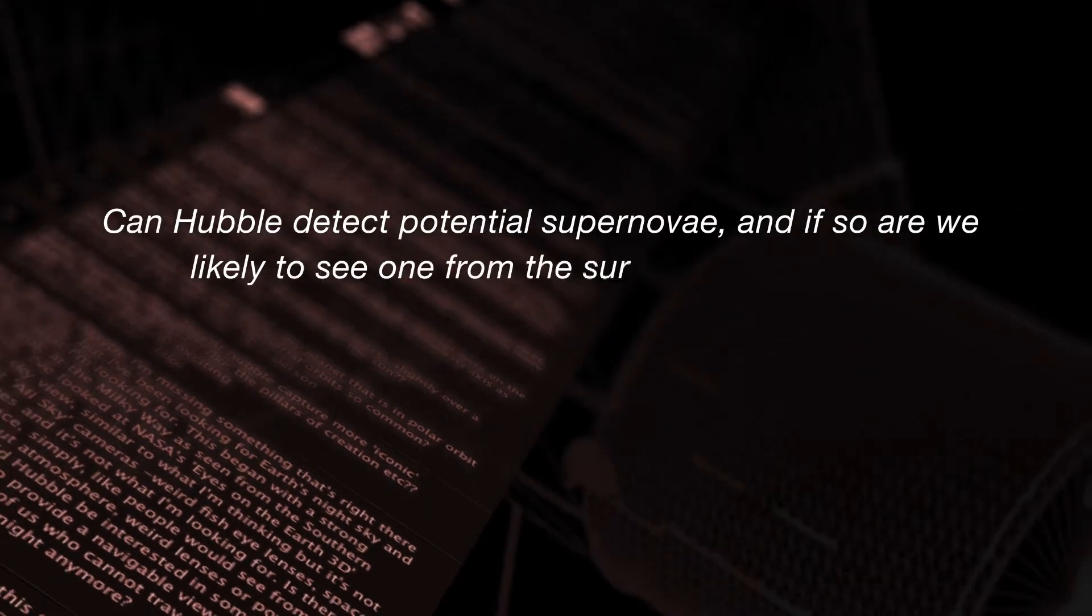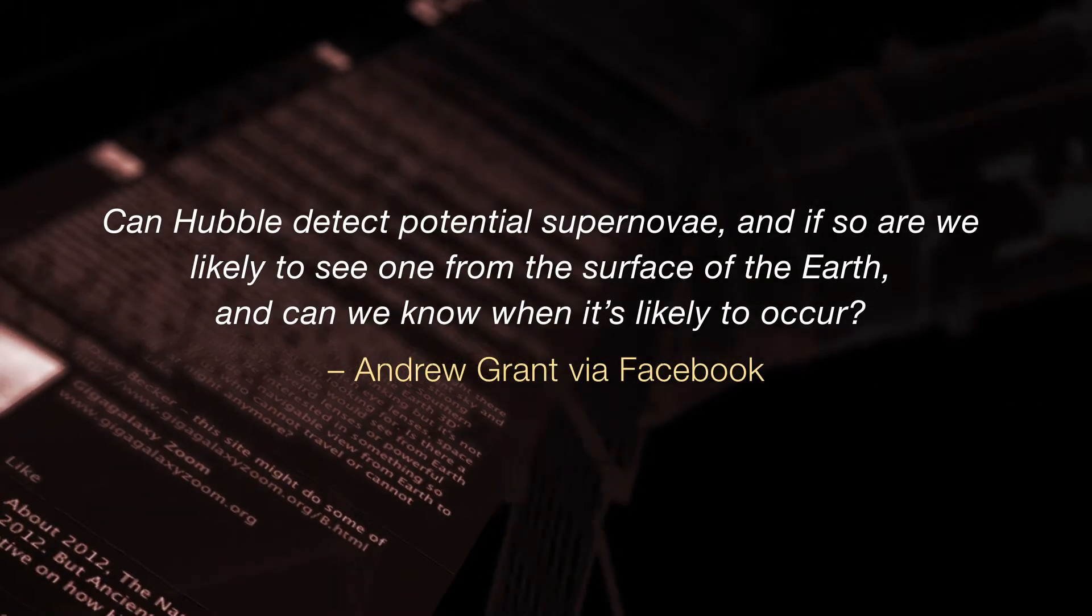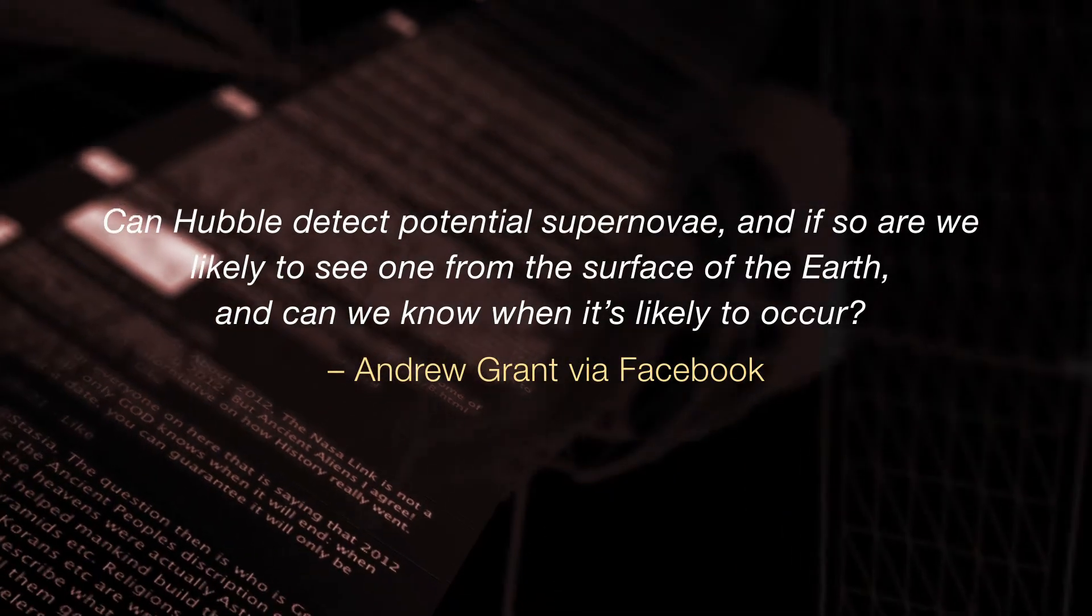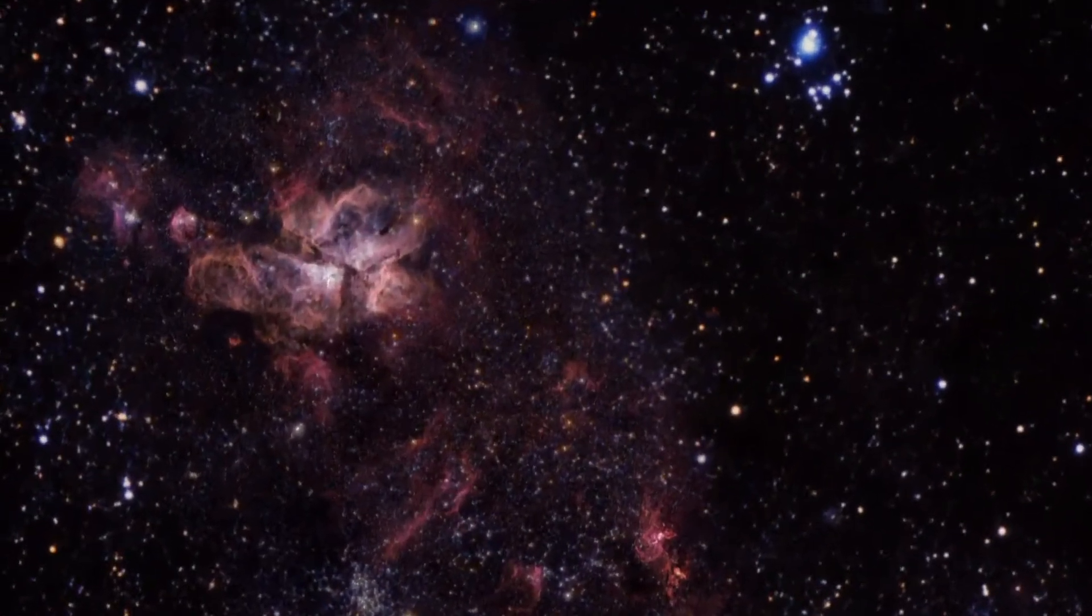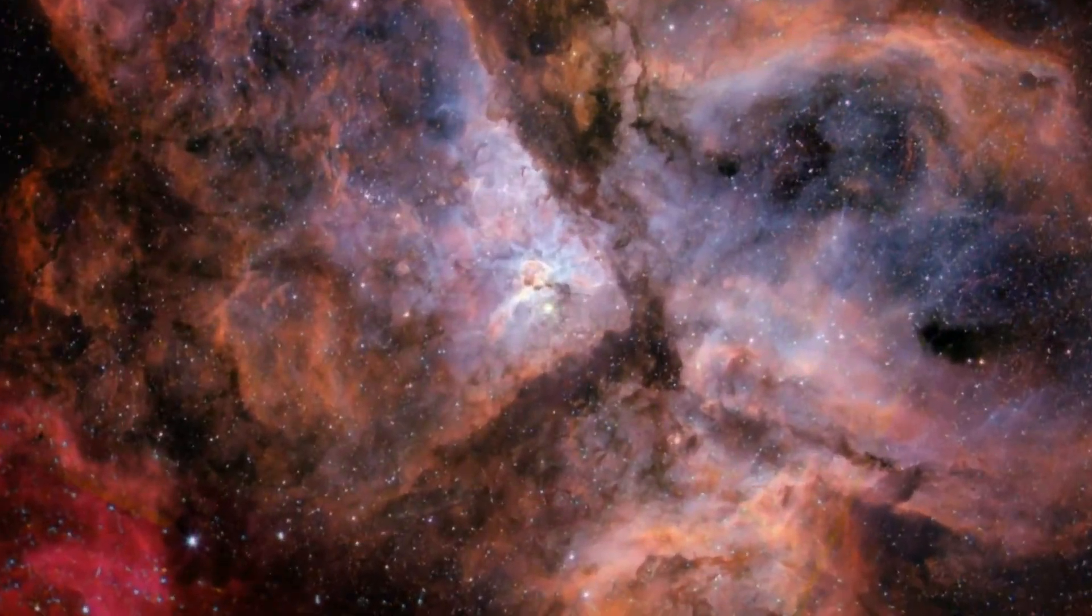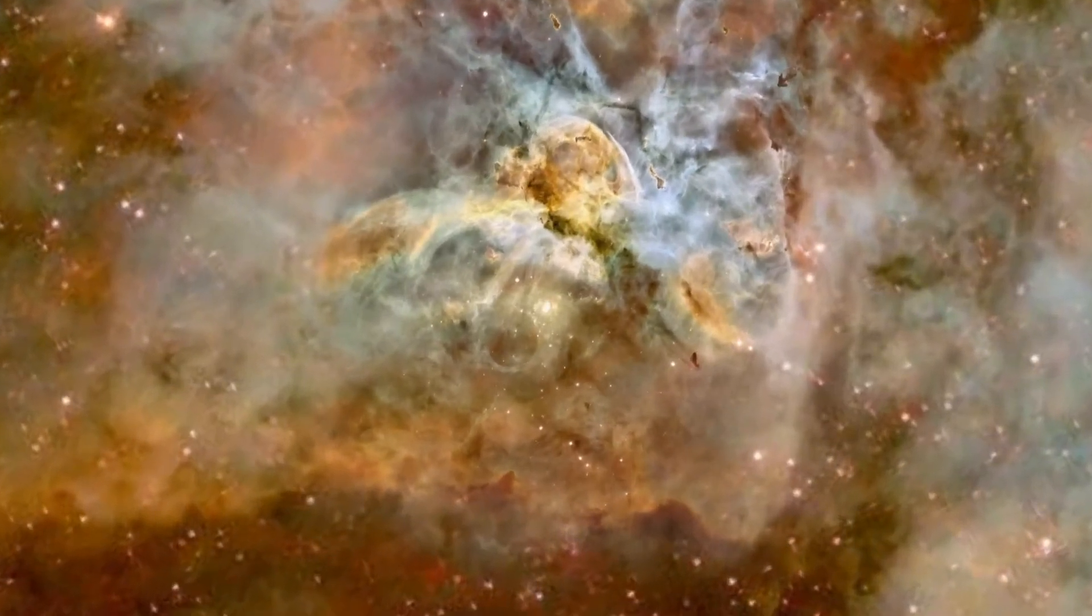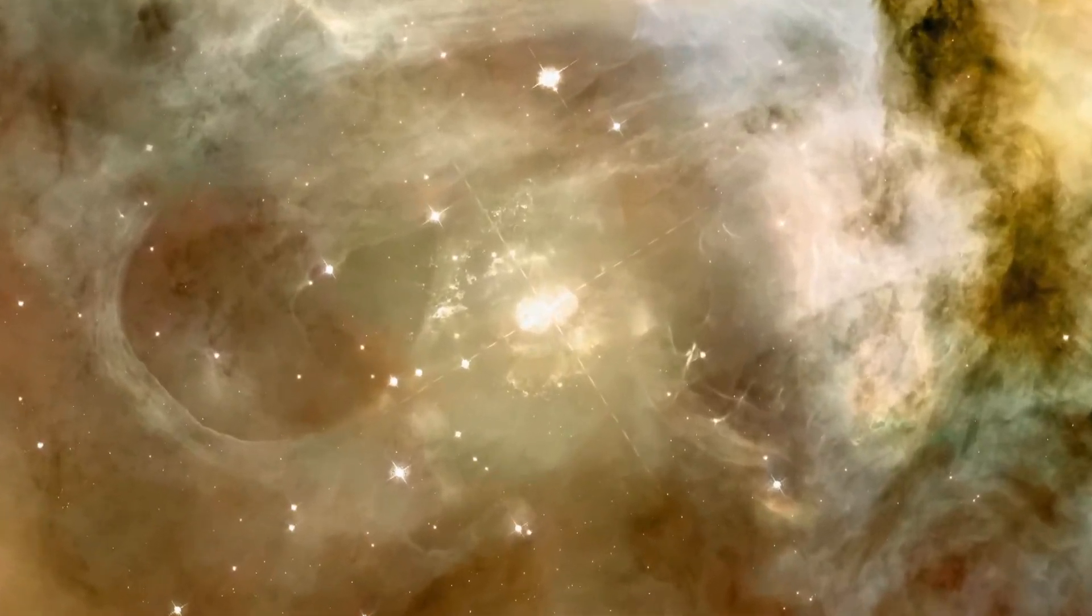Can Hubble detect potential supernovae? And if so, are we likely to see one from the surface of the Earth? And can we know when it's likely to occur? Well, predicting supernovae is a bit like predicting earthquakes. We can spot the stars that are likely to explode, but we can't tell when exactly the explosion is going to happen. One of the supernova candidates that is closest to Earth is the star Eta Carinae, which is about 7,000 to 8,000 light-years away. This star nearly exploded already in the 19th century, and when Hubble came to image it in the 1990s, the huge gas cloud that was ejected during that failed supernova was clearly visible. Again, we can't predict when exactly Eta Carinae is going to explode. It could be tomorrow, or it could be a million years from now. But of course, in astronomical terms, that's just any minute now.